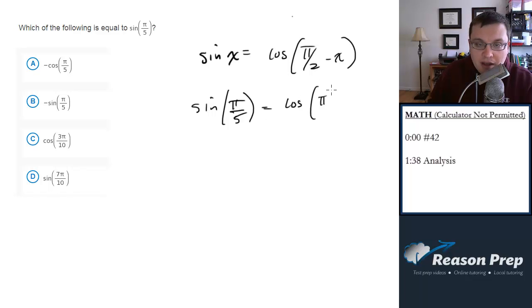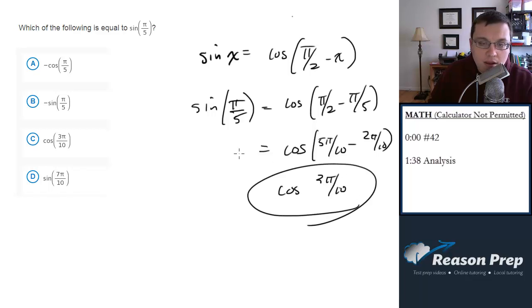Cosine of pi over 2 minus pi over 5. Now I need to combine these fractions. Put them both over 10: 5 pi over 10 minus 2 pi over 10, which equals cosine of 3 pi over 10. That's choice C.